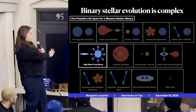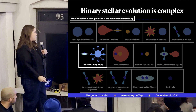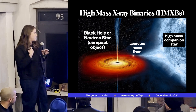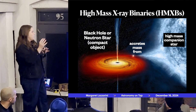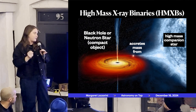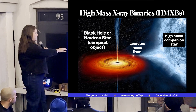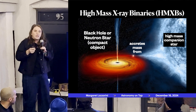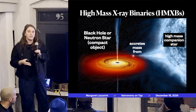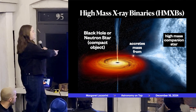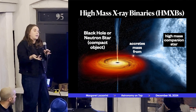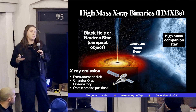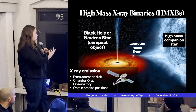I want to highlight one specific phase in this evolutionary picture: the high-mass X-ray binary phase. This is an intermediate stage, and it's what I personally study using observations of nearby galaxies. A high-mass X-ray binary occurs when the first star in a binary has exploded and turned into a black hole or neutron star. That compact object is then accreting — basically eating — material from the other, companion star, forming an accretion disk that glows in X-rays.